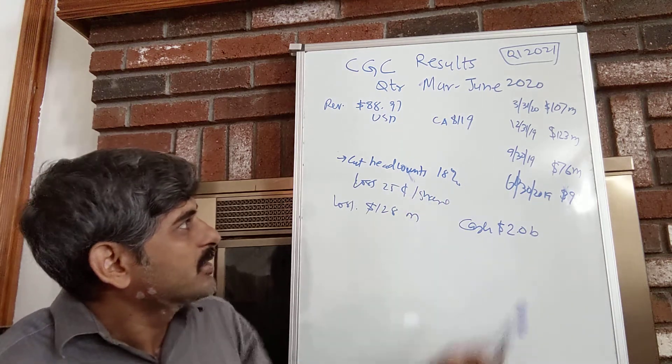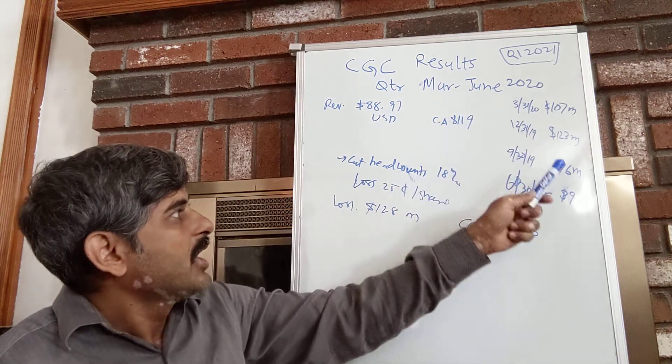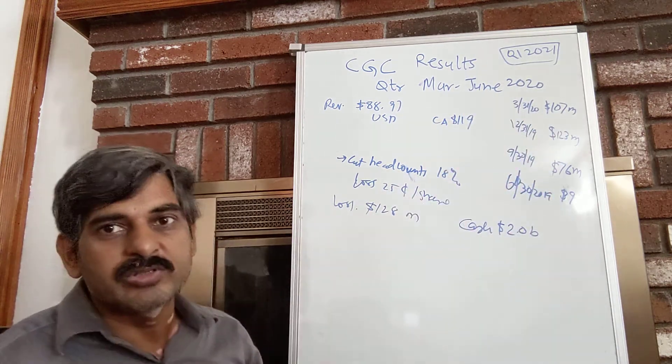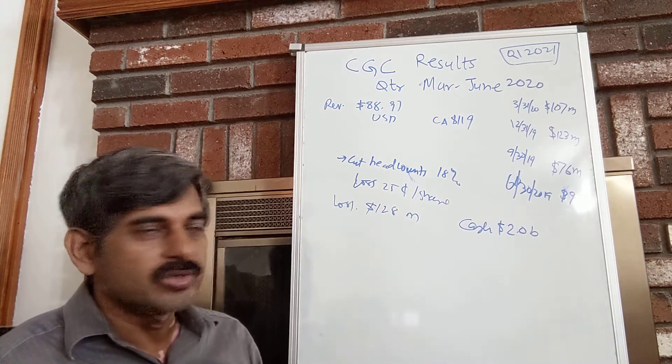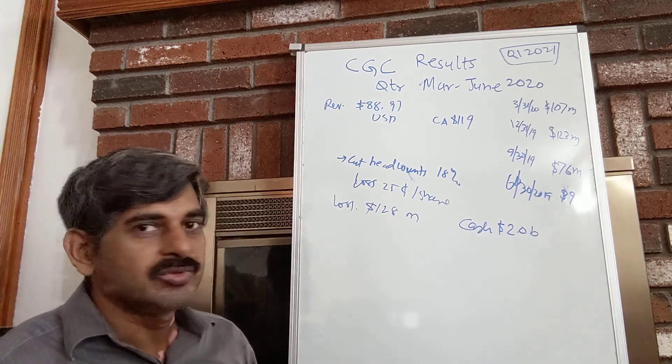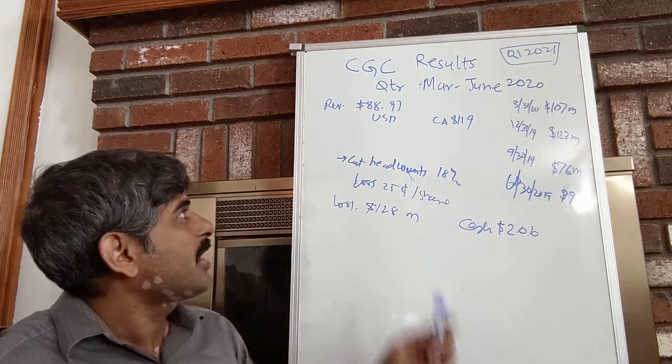But with the hope that this thing $107 million Canadian dollar, $119 million and then it goes back $123 million and more for the next quarter, it should be on its path to profitability at some point of time. So this is what I have here.